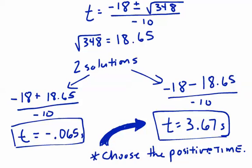We always choose the positive value for time, because negative time doesn't really make sense. The ball is not going to hit the ground before I threw it. That's what negative time would mean. So it makes sense that we would choose the positive value for time.